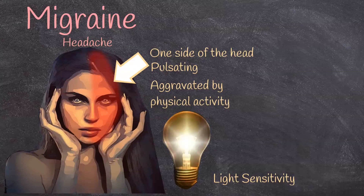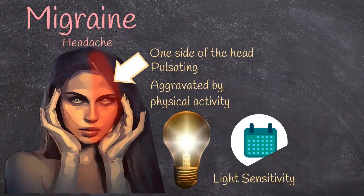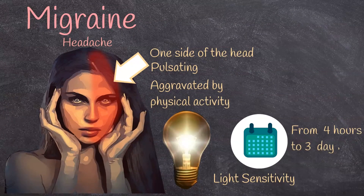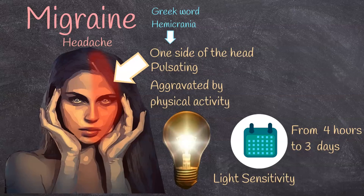Migraine attacks are a complex brain event that unfolds over hours to days, usually from four hours to three days, in a recurrent manner. The hallmark of migraine is the pain on one side of the head. Even the word migraine is from the Greek hemicrania, which means pain in half of the head.